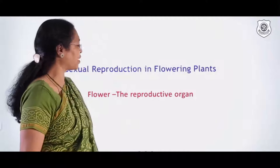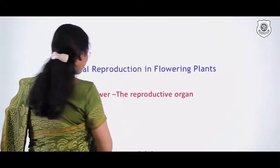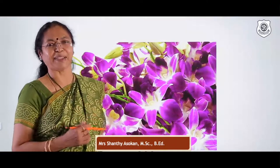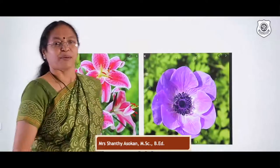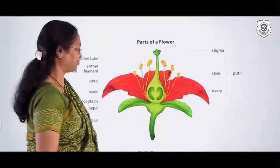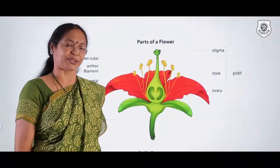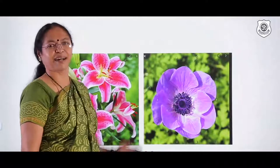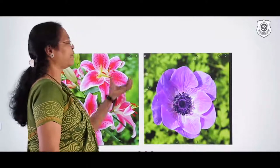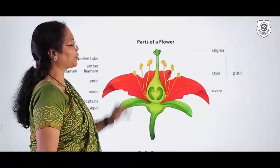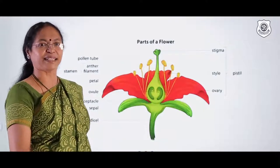Today let us learn sexual reproduction in flowering plants. Flowers are a wonderful creation of God — beautiful but very short-lived — and they are the reproductive organs of plants. They give rise to the next generation. Before we go to sexual reproduction, understanding the structure of the flower is important.